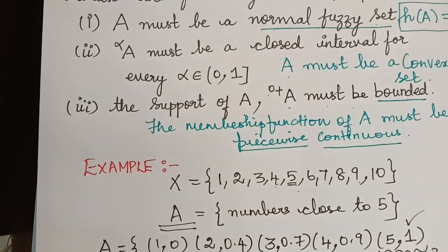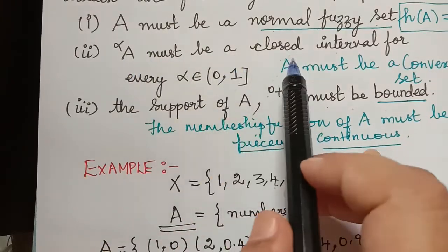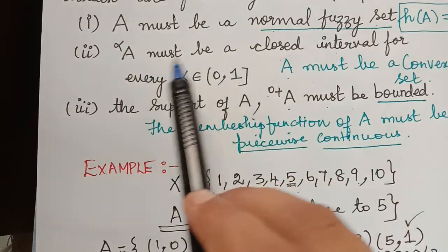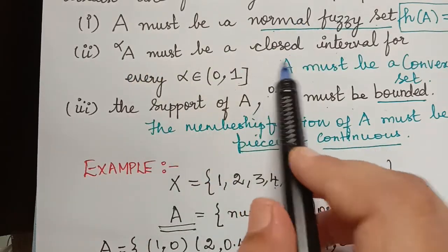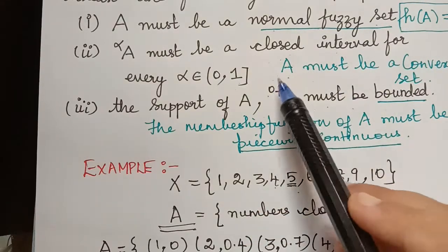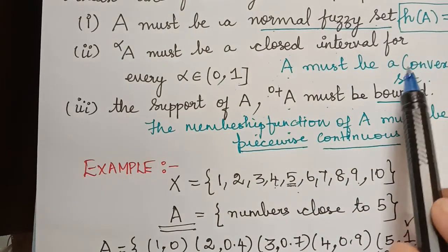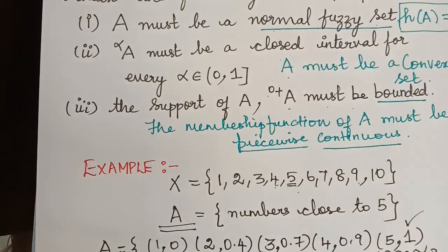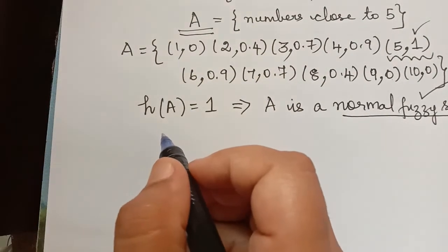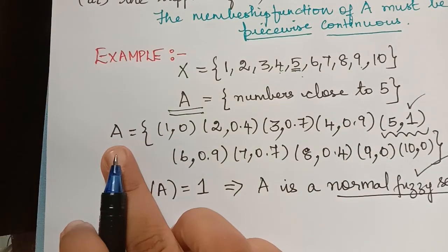Now let us check the second condition. The alpha cut of A must be a closed interval for every alpha element of (0, 1]. We can also prove this by showing that A is a convex set — that is, if all the alpha cut sets are convex sets, then A is convex. Let us check whether the alpha cut of the fuzzy set A is convex or not. For that we have to consider a value for alpha.